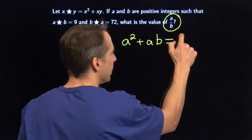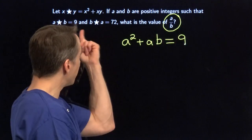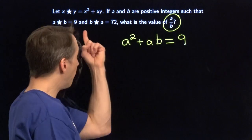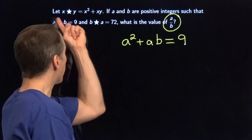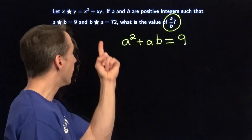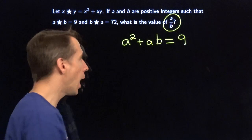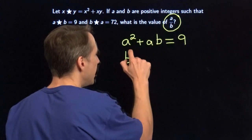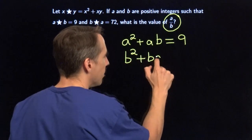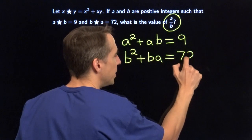We're told that equals 9. Then we do the same thing for b★a. Now b comes before the star, so b is where the x is — we put b in for x. And a is after the star, so we put a in for y. So b★a is b squared plus b times a, and we're told that has to be 72.